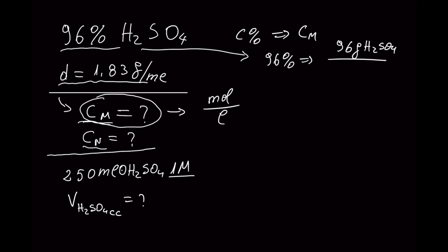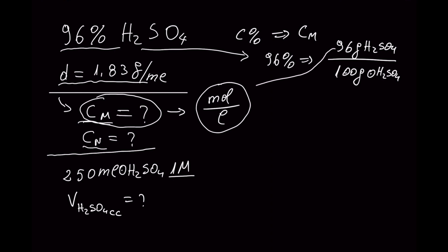96% means that you have 96 grams of pure sulfuric acid divided by 100 grams of the solution. To convert this to moles per liter, you need to convert the 96 grams into moles of sulfuric acid, and the 100 grams of solution into liters. For converting the 100 grams to liters, you are going to use the density of the acid.